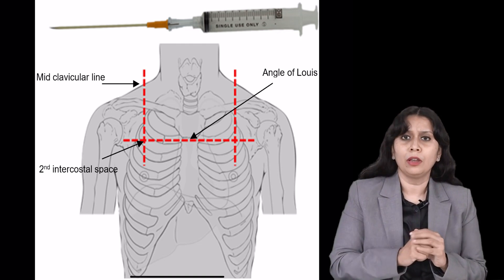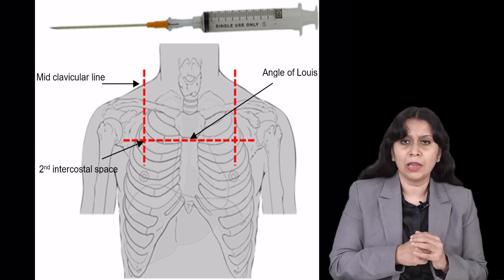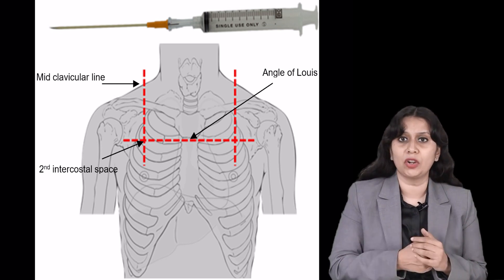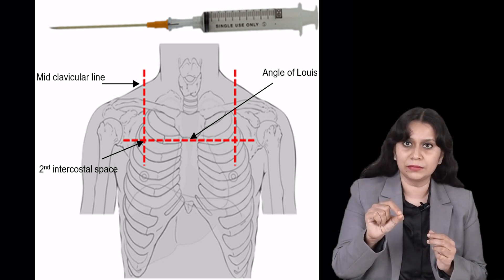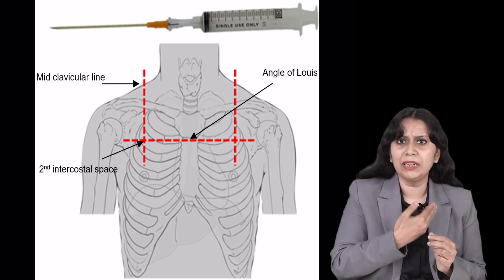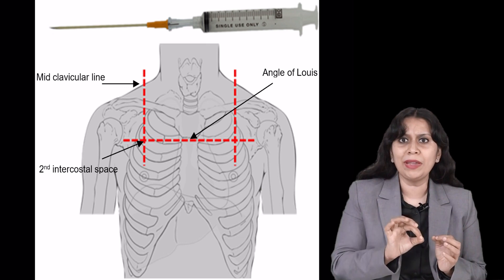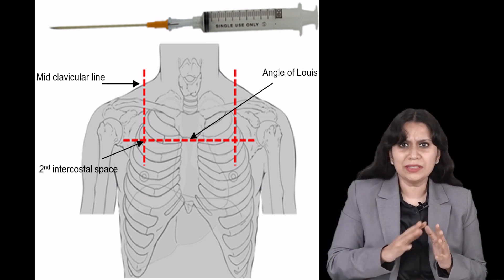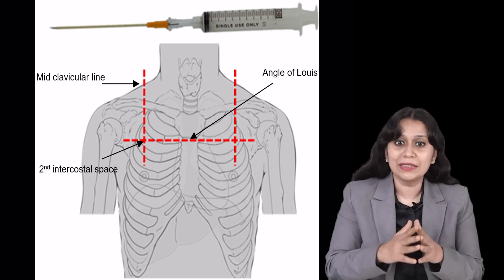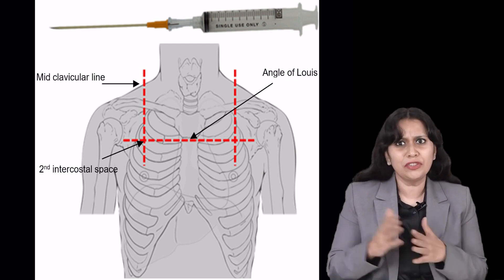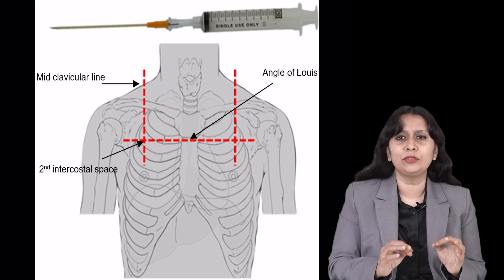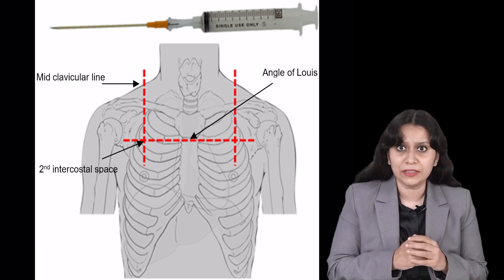What is this needle decompression? We take a thick bore needle — 14 or 16 gauge — and in the mid-clavicular line, in the second intercostal space, we pierce that needle. Your second intercostal space is one centimeter below the clavicle. We pierce the needle and open the hub of the needle to the atmosphere. This is emergency management of tension pneumothorax, not the definitive treatment. You will see immediate relief once you put the needle.